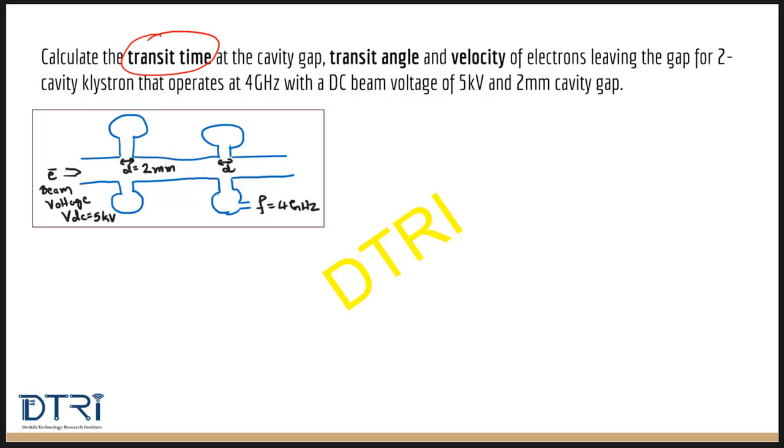Less time implies higher frequency. Next, what is transit angle? Technically speaking, this is not an angle but rather a phase delay as the signal passes through this cavity. We want this delay as low as possible.